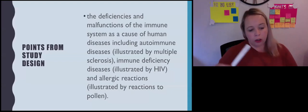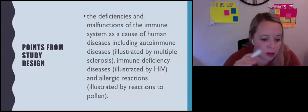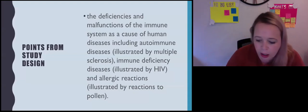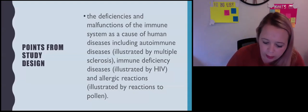What we need to do is talk about the deficiencies and malfunctions of the immune system, but what we're really looking for are the three different types. We're going to talk about autoimmune diseases, and you need to know the example of multiple sclerosis.